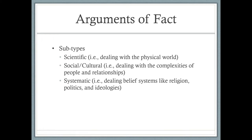I break arguments of fact down into three basic subtypes. There are arguments of fact that are scientific — they deal with the physical world. So if we start talking about carbon levels in the atmosphere, we're making a scientific argument of fact. There are also social-cultural arguments of fact, dealing with the complexities of people and relationships. So if I'm making an argument about racism in our society — for example, that racism is rampant within our governmental system — then I would be making a social-cultural argument of fact.